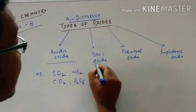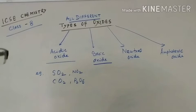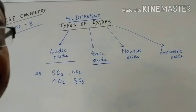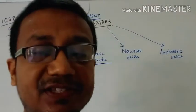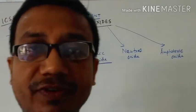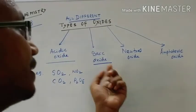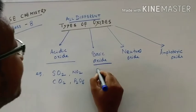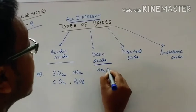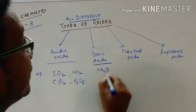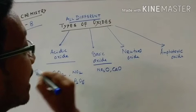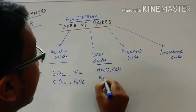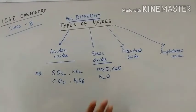Basic oxides are metallic oxides which produce bases or alkalis when they react with water. Examples include sodium oxide, calcium oxide, and potassium oxide. These are the basic oxides.